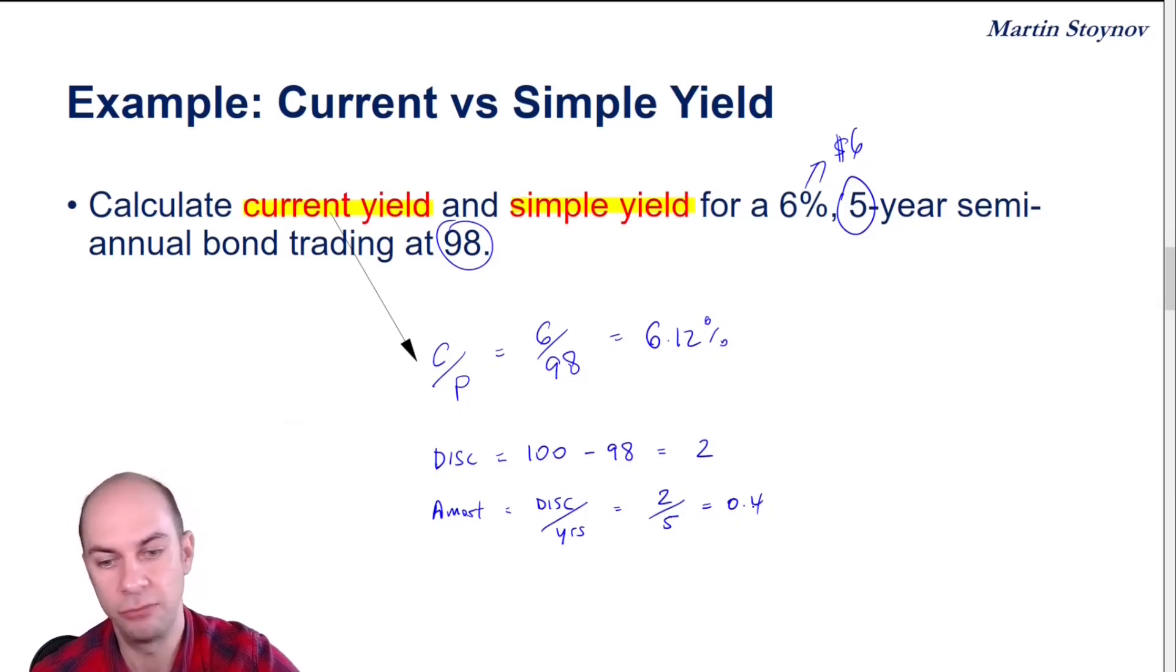So now I'm ready to calculate my simple yield, which will take the coupon. I know that my bond will effectively be gaining $0.40 per annum for the next five years. So I'm going to be adding that amortization here and then dividing by the price. And that gives me a simple yield of 6.53%.